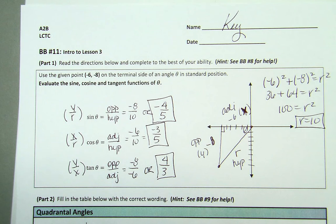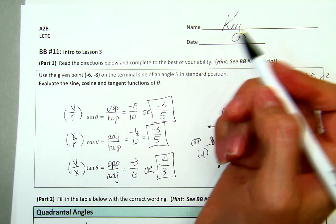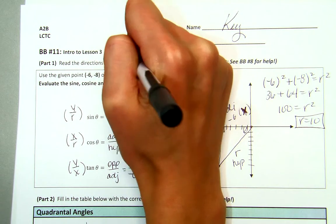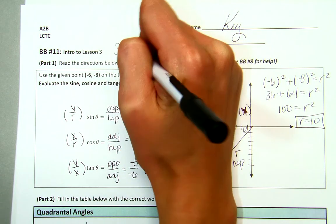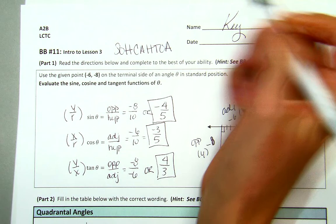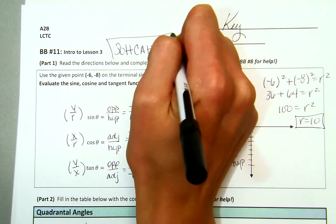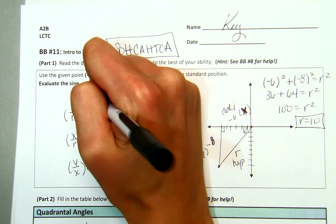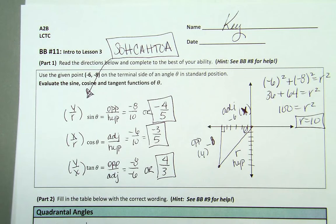Just as a key review, part one for Blackboard assignment 11 is given in this video. The idea is we are now going from SOHCAHTOA — S-O-H-C-A-H-T-O-A — and building onto that concept of X, Y, and R.